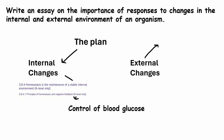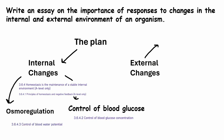For the essay plan, internal changes include the control of blood glucose, which is part of homeostasis, and also osmoregulation. Both are in topic six, but notice they're separate subtopics: osmoregulation is 6.4.3 and control of blood glucose is 6.4.2. So we're okay to use both — that counts as two separate topics.